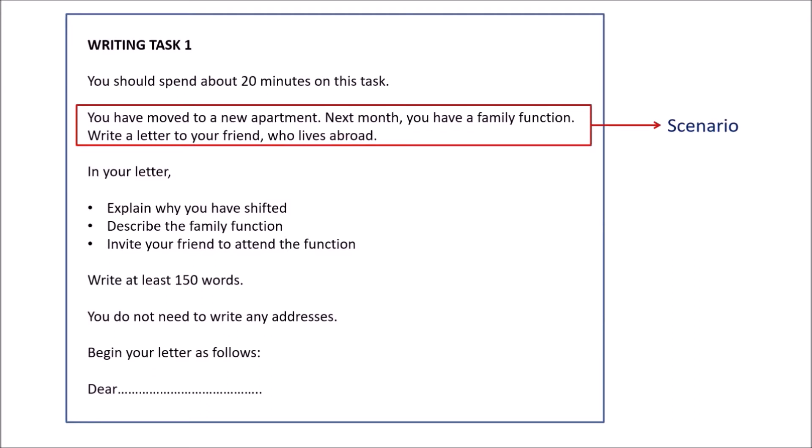The question statement says: you have moved to a new apartment and next month you have a family function — write a letter to your friend who lives abroad. This clearly indicates it's an informal letter. The scenario is that you have a family function at your new apartment and you need to invite a friend who lives abroad. The three bullet points tell you exactly what to write, and the examiner will look for information around these bullet points — nothing more, nothing less. The task card tells you everything from what to do to how to do it; it's like a ready-made plan to follow.